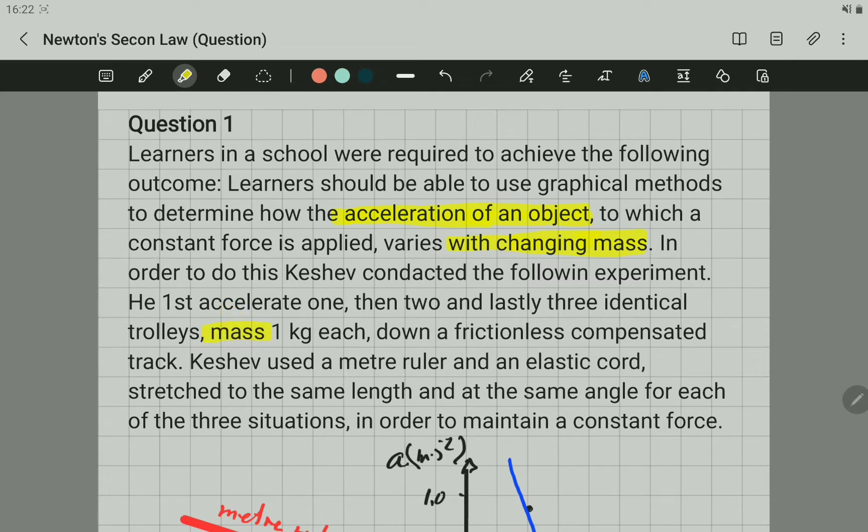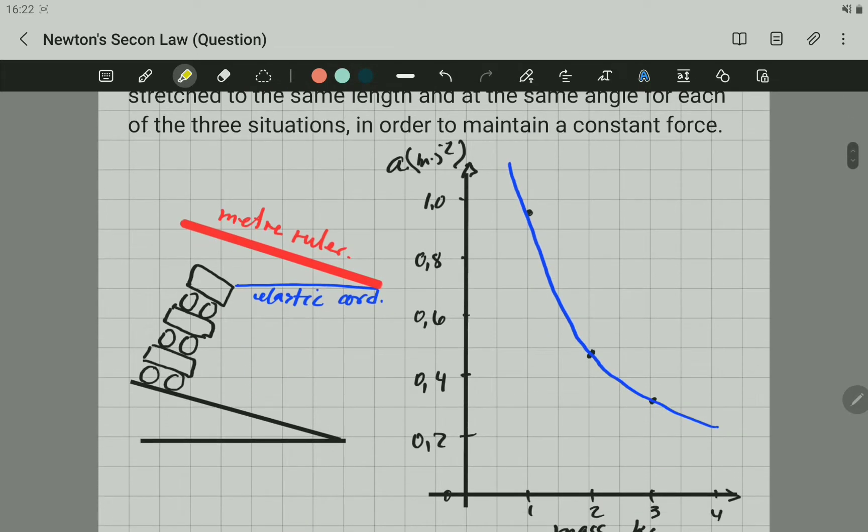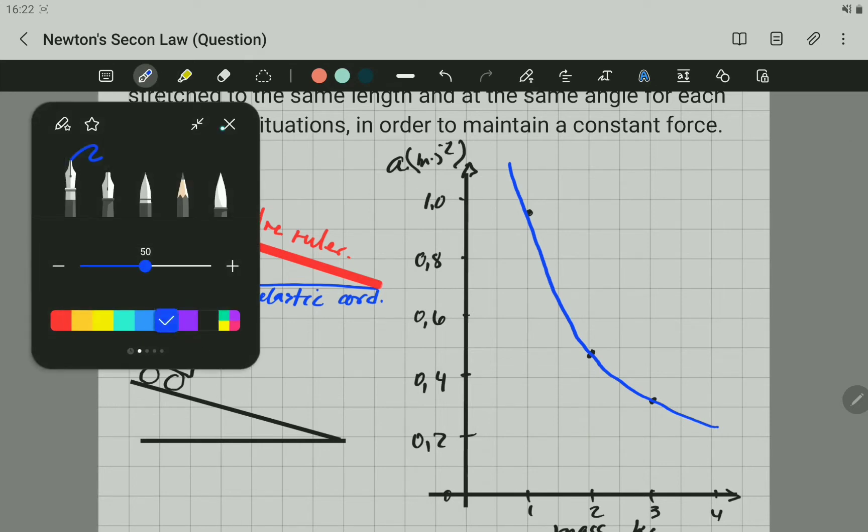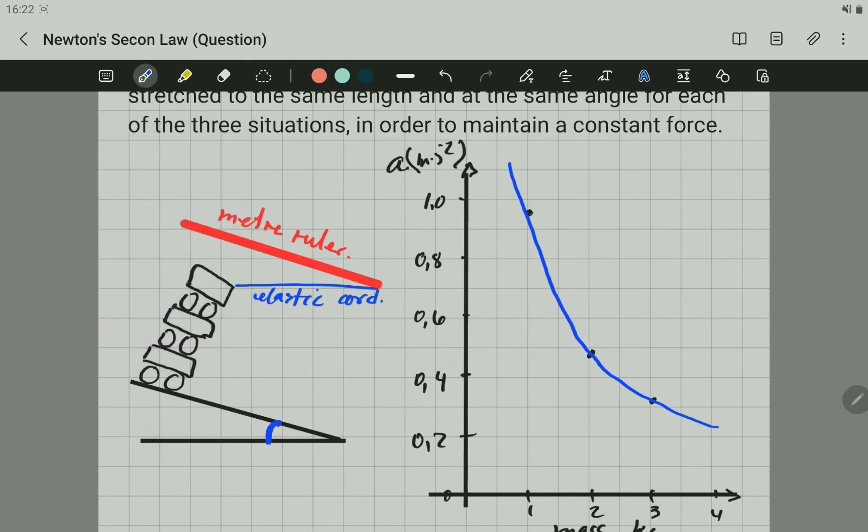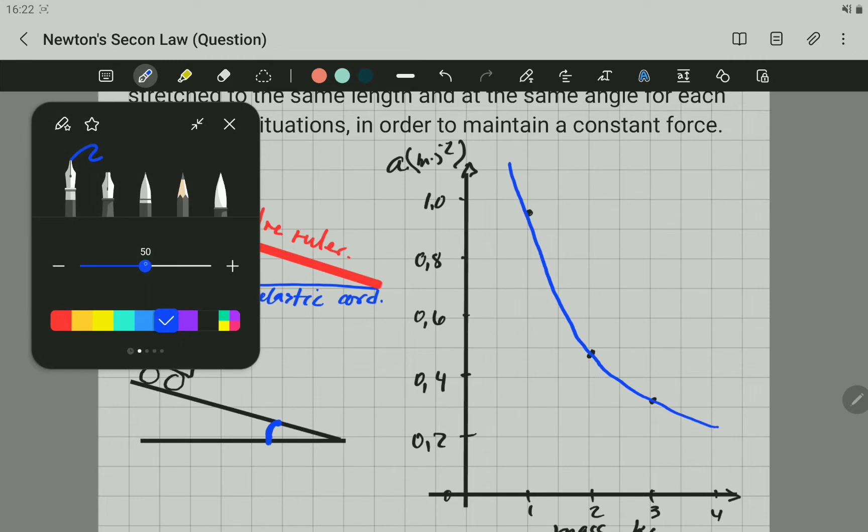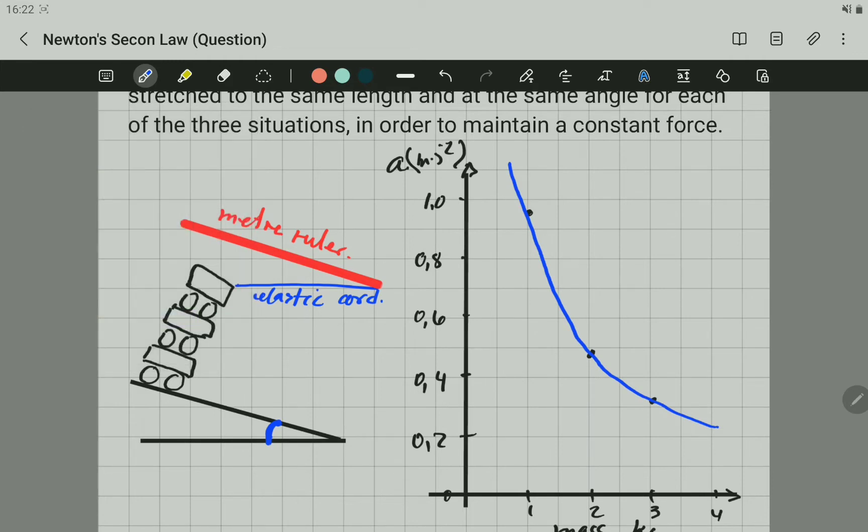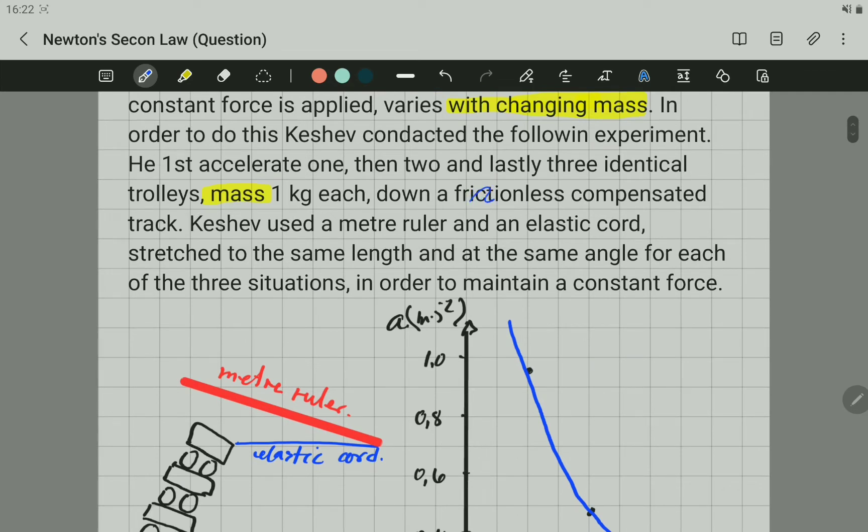This was done down a frictionless compensated track. Remember also from the experiment, a frictionless compensated track means that the track is being inclined like you have it here. You can see in this track that there is an inclination, and that was done when the object was moving at constant velocity, and that was exactly to compensate for friction.